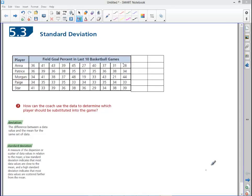Okay, the next section is 5.3 Standard Deviation. We'll begin with the example in the book. You're coaching a team and you have five players who you could substitute into the game. The problem posed to us here is how can a coach use the data to determine which players should be substituted into the game.